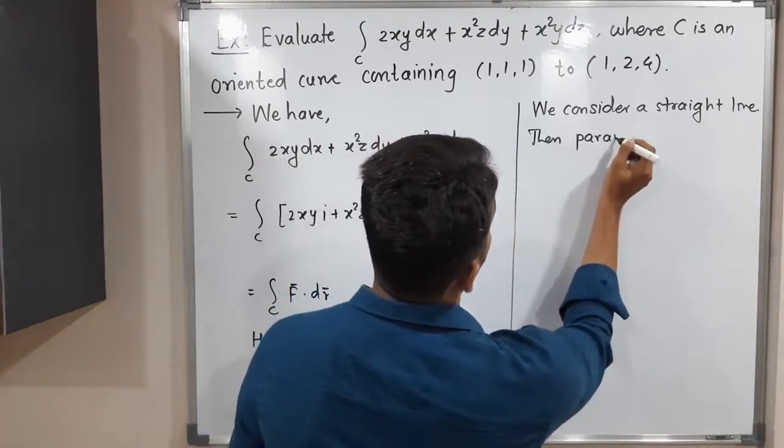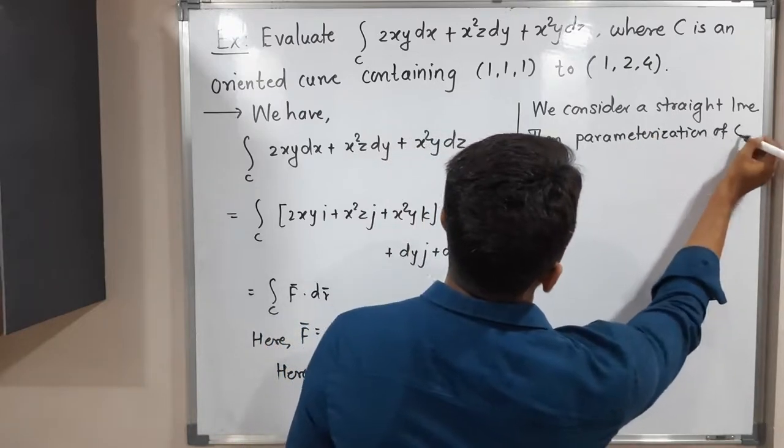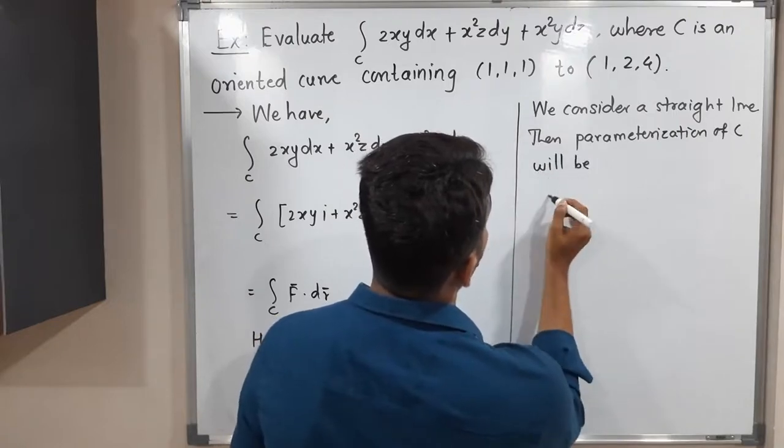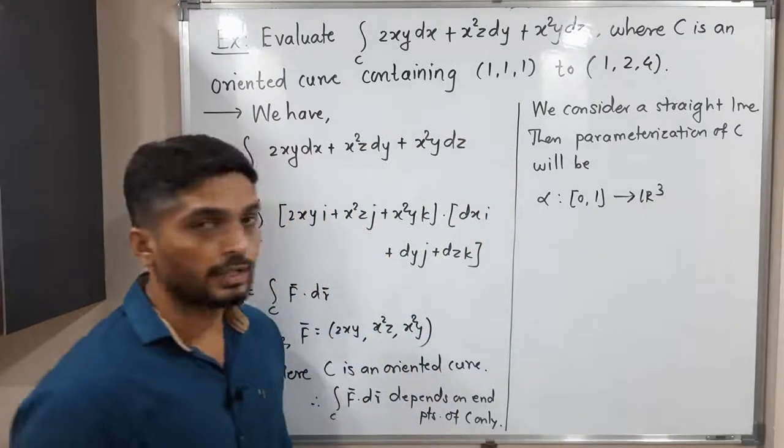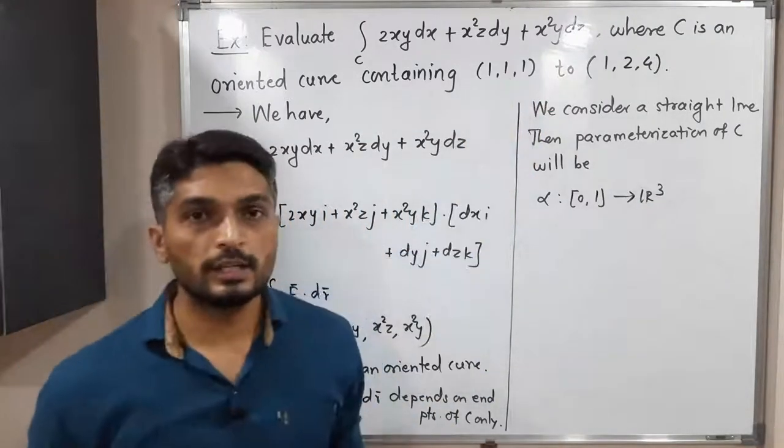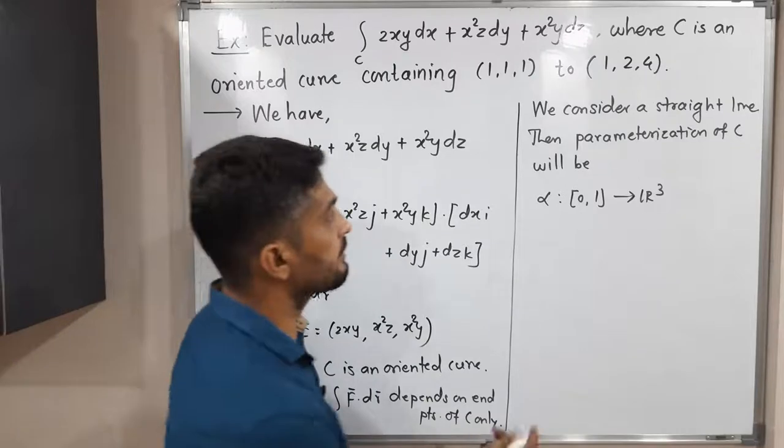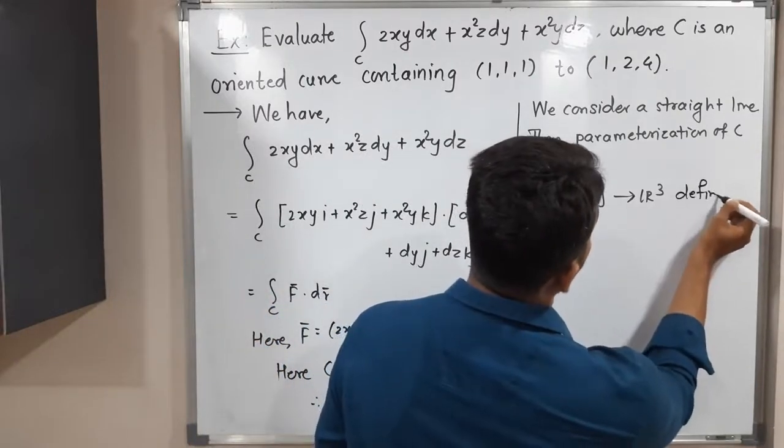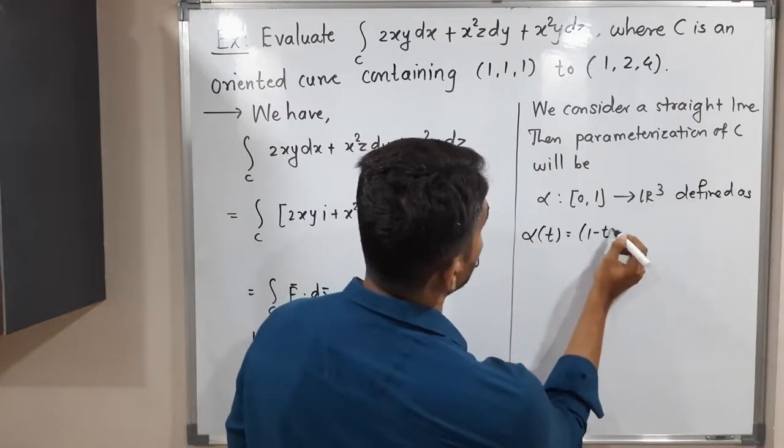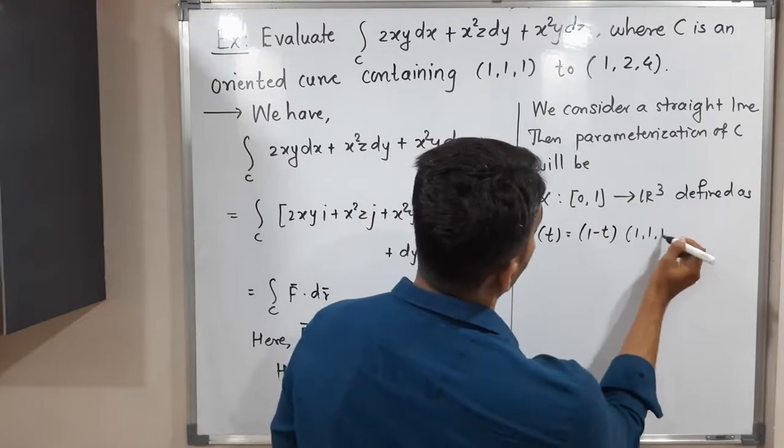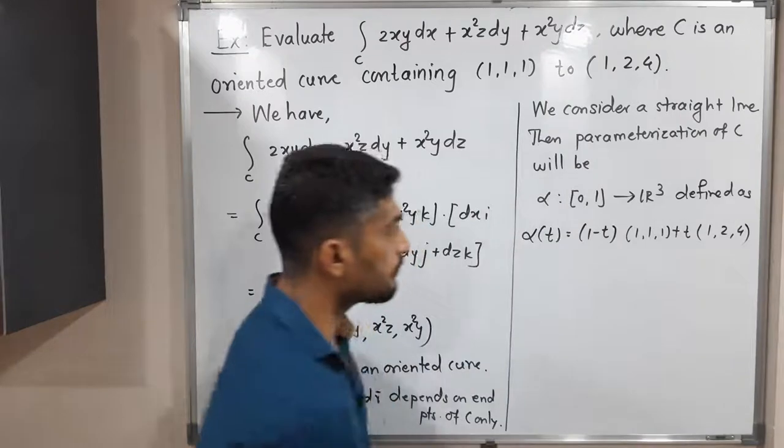So then parameterization of C will be—we will denote it by alpha. Alpha defined on closed interval [0,1] to R³. So you know that when we have a straight line which joins these two points, it has some standard parameterization. So alpha always we define on closed interval [0,1] and it is defined as alpha(t) equals (1-t) into starting point (1,1,1) plus t into end point (1,2,4). Let us simplify it further.